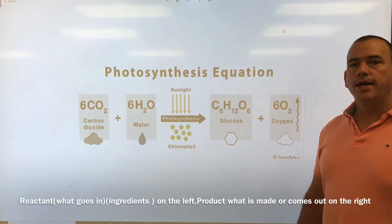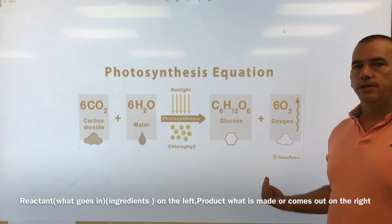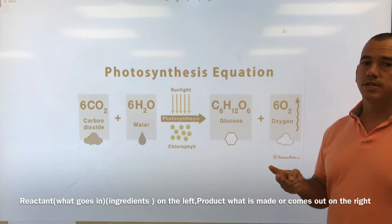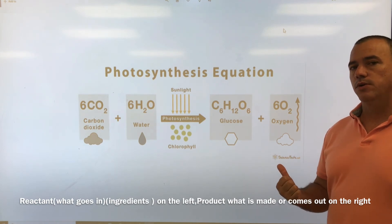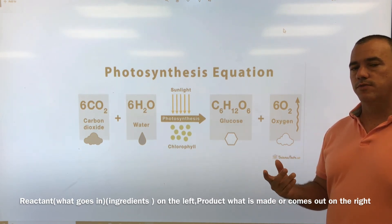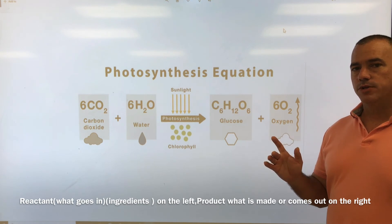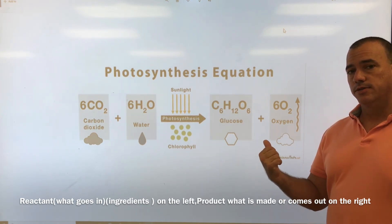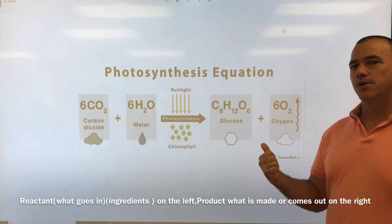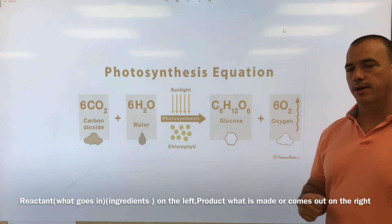Now we're looking at the formula for photosynthesis — you need to memorize this. If you memorize the diagram showing the chloroplast with the light reaction and the dark reaction, and then memorize this formula, you'll be in good shape. The next vocabulary item is actually a formula, so write the whole formula down now.